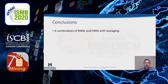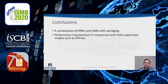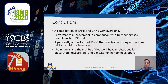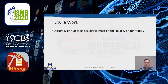In this work, we presented an ensemble model using RNNs and CNNs combined by averaging. We showed that our ensemble model outperforms the supervised PP-PREP model and significantly outperforms S3VM. The findings have implications for researchers, biocurators, and developers in the biotext mining domain. We also observed that the accuracy of NER tools such as NCBO Annotator and LinkPipe directly affects the quality of our model.